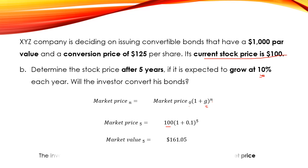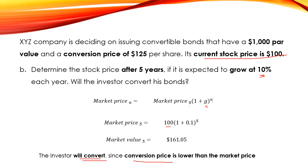In this case, the investor will convert his bonds because the conversion price is lower than the market price. He will convert and get stock worth $161.05, whereas he only paid $125.